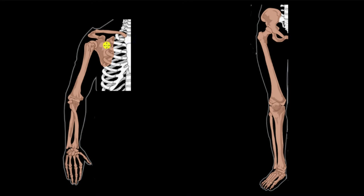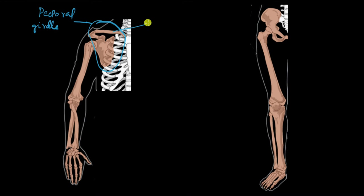This part here is called the pectoral girdle. The pectoral girdle consists of two bones. This long one right here is the collar bone, and the scientific name for it is the clavicle. The triangular bone over here, present on the back on the dorsal side, is called the scapula. The common English term for it is the shoulder blade.